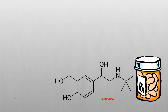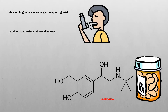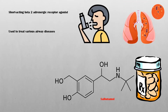Salbutamol is a short-acting beta-2 adrenergic receptor agonist, used to treat various airway diseases such as asthma, chronic obstructive pulmonary disease, and to prevent exercise-induced bronchospasms.